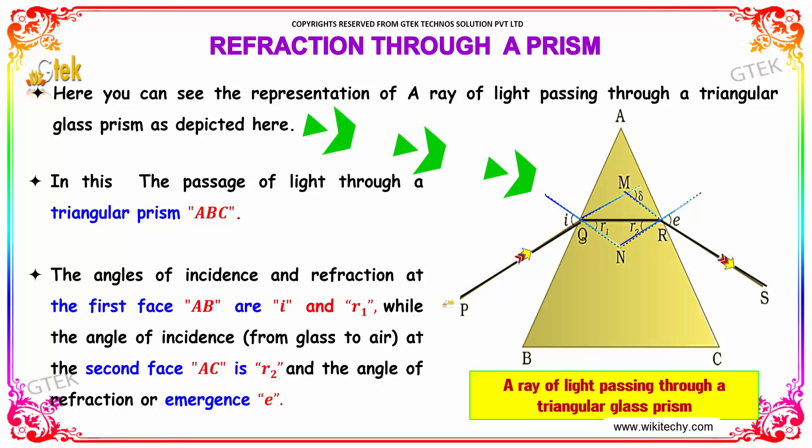The angle of incidence from glass to air at the second face AC is given by r2, and that is referred to as angle of refraction or emergence e.